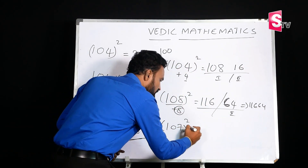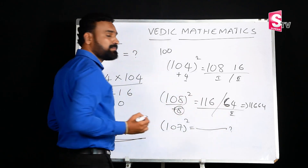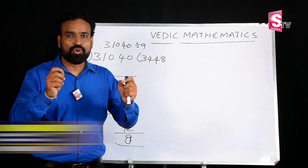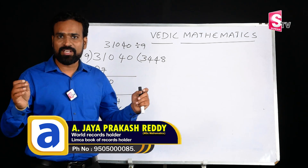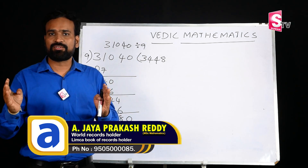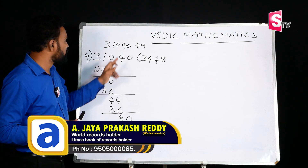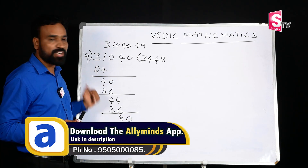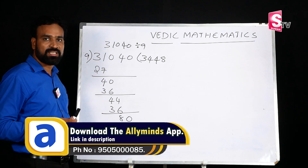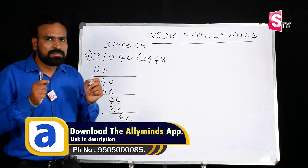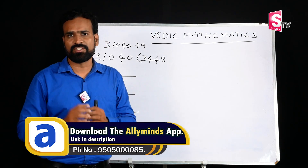The next Vedic Mathematics method is the division method. We can find the quotient and remainder of a number divided by 9 in 3 to 4 seconds. For example, 31040 divided by 9 — the school method takes time, but the Vedic Mathematics method uses simple addition and gives the quotient and remainder in a maximum of 3 to 4 seconds.